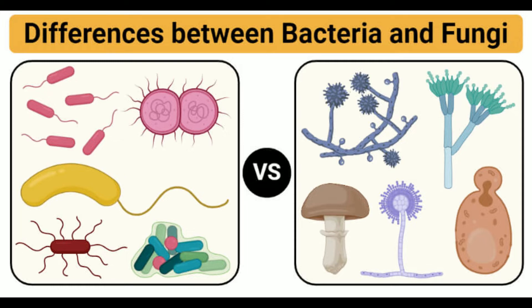and fragmentation, but different methods like transformation, transduction, and conjugation are available for the transfer of genetic materials. Bacteria can be either producers (chemoautotrophs) or consumers (heterotrophs), and even decomposers.